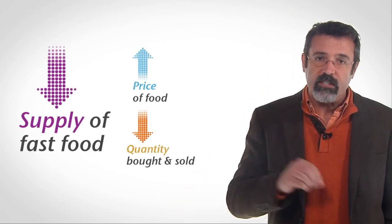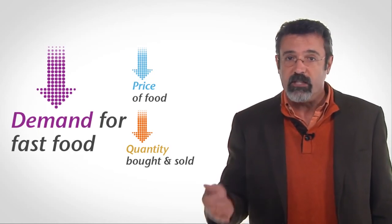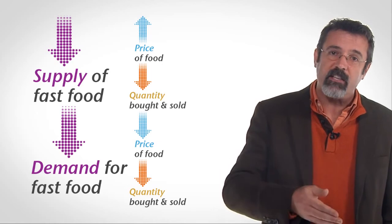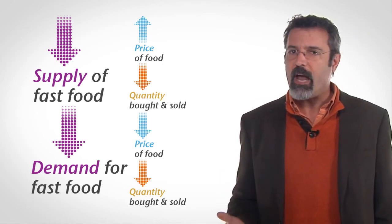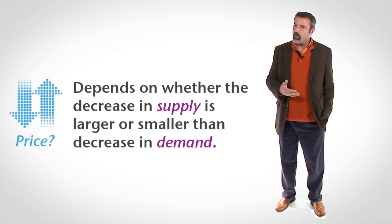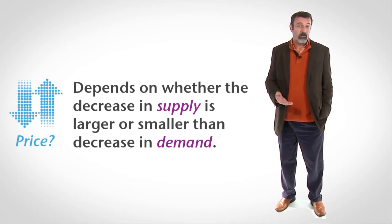Now that we've seen what effects each of these events will have separately, we can put them together. We know that the supply of fast food will decrease and the demand for fast food will decrease, so the quantity of fast food sold will decrease. But what happens to the price of fast food depends on whether the decrease in supply is larger or smaller than the decrease in demand. Now that we have these tools, you can take any event — a war, an increase in the population, a new technology — and if you know what effect this event will have on demand and supply, you can predict what will happen to the price of a good and the quantity of the good that's bought and sold.